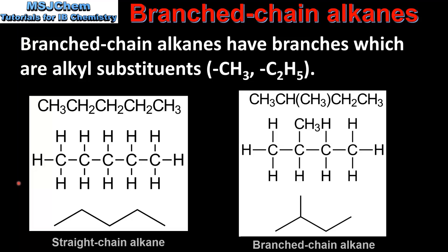On the left we have a straight chain alkane; on the right we have a branched chain alkane. In straight chain alkanes the carbon atoms are connected in a continuous chain with no branches. This example is C5H12, which is pentane. Branched chain alkanes have alkyl groups which are bonded to the main carbon chain. In this example on the right we have a methyl group which is a branch coming off the longest carbon chain.